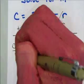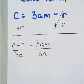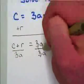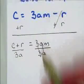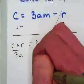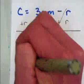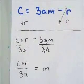And watch what happens when we divide the right-hand side by 3a. The 3's cross out and the a's reduce. They both reduce. So I'm left with just m. m equals, and I've got on my left-hand side, c plus r over 3a. And that's it.